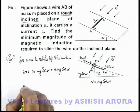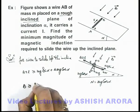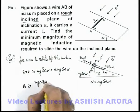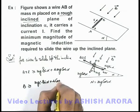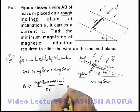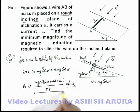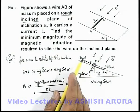So in this situation, the value of magnetic induction should be greater than or equal to mg(sin α + μ cos α) divided by IL. That will be the answer to the question, as this is the minimum magnitude of magnetic induction which we require to slide the wire up the inclined plane.